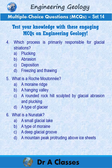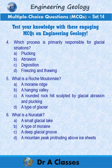Question 4: Which process is primarily responsible for glacial striations? A. Plucking. B. Abrasion. C. Deposition. D. Freezing and thawing.